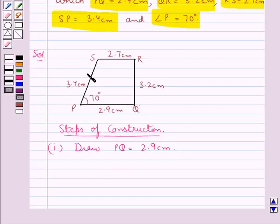Now in the rough sketch of the quadrilateral PQRS you can see that angle P is of measure 70 degrees. So in the next step we make angle XPQ equal to 70 degrees.